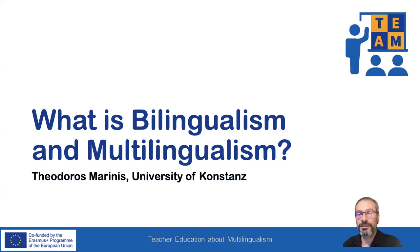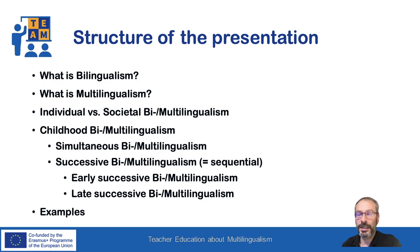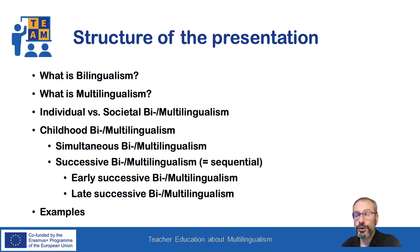This short presentation will provide some definitions about bilingualism and multilingualism. I will first introduce what is bilingualism and what is multilingualism, then the differences between individual and societal bilingualism/multilingualism, as well as simultaneous versus successive multilingualism, including early and late successive. The presentation will finish with examples from bilingual/multilingual children to illustrate the different types of childhood bilingualism.